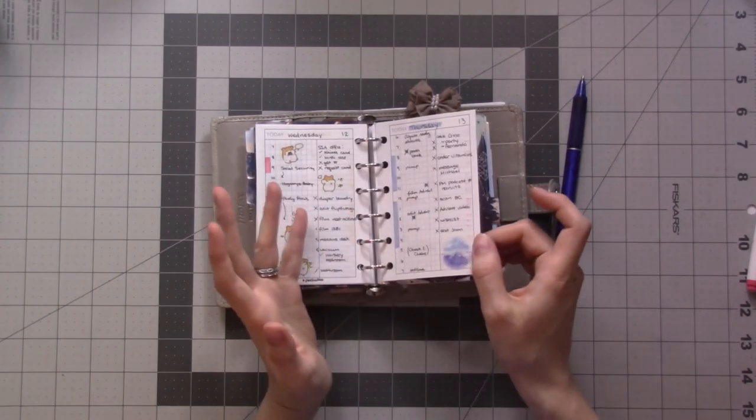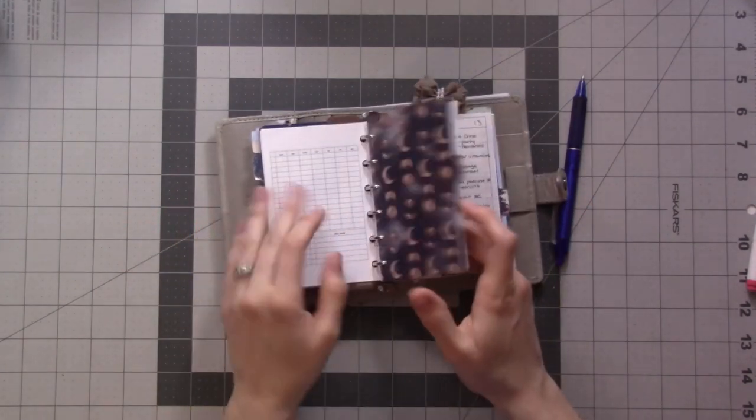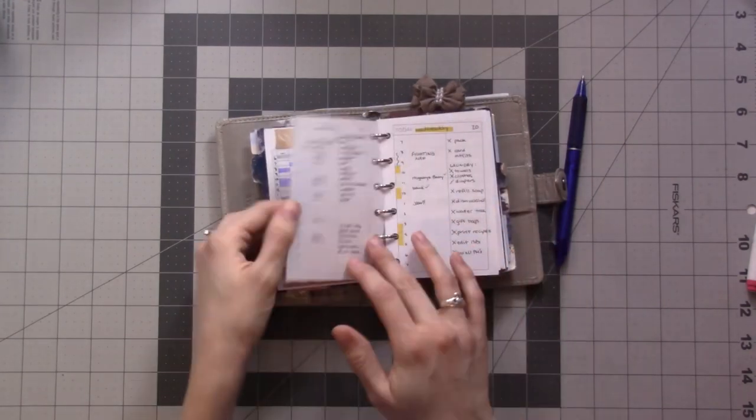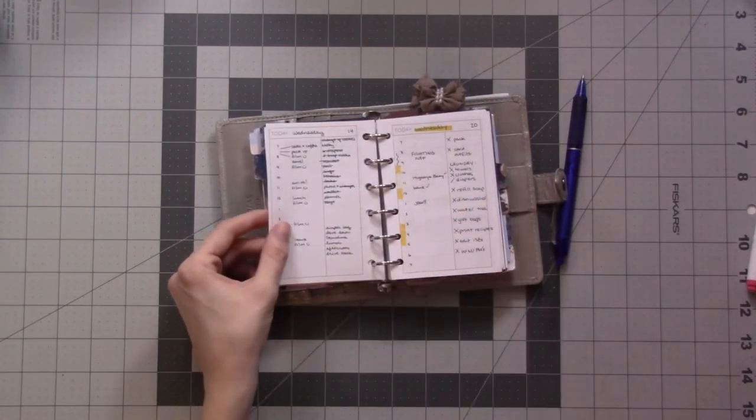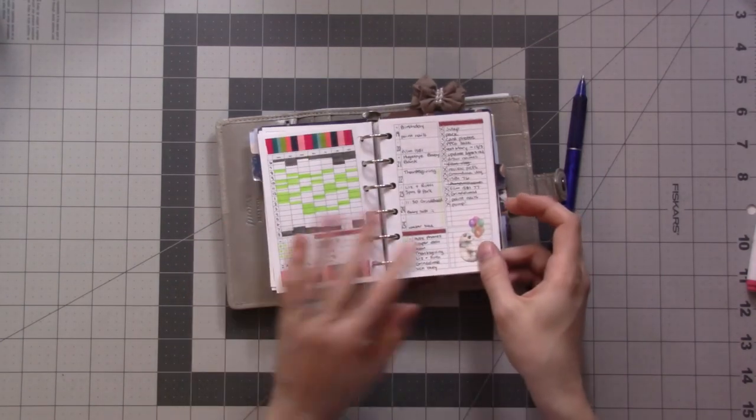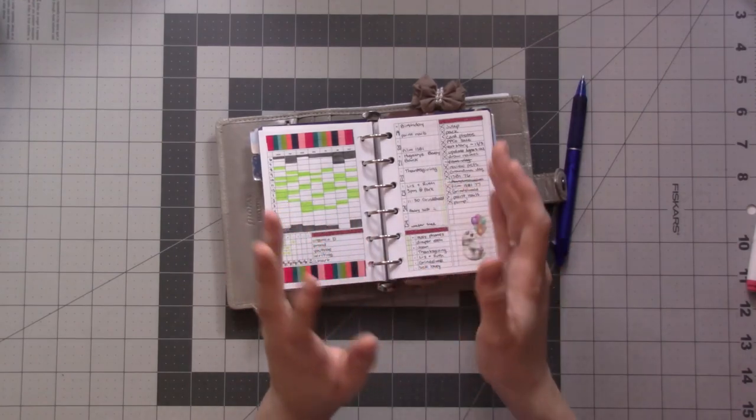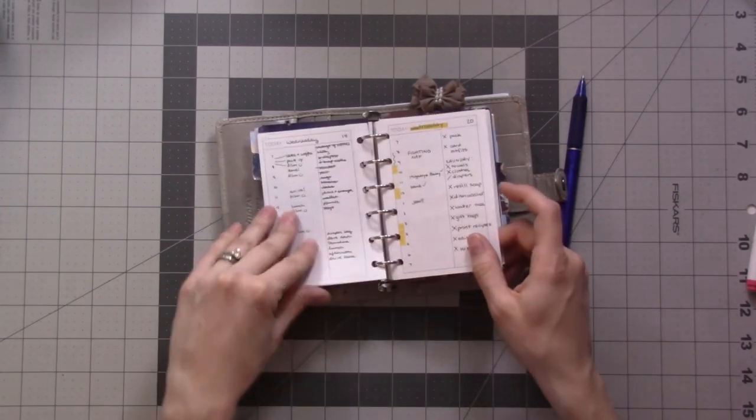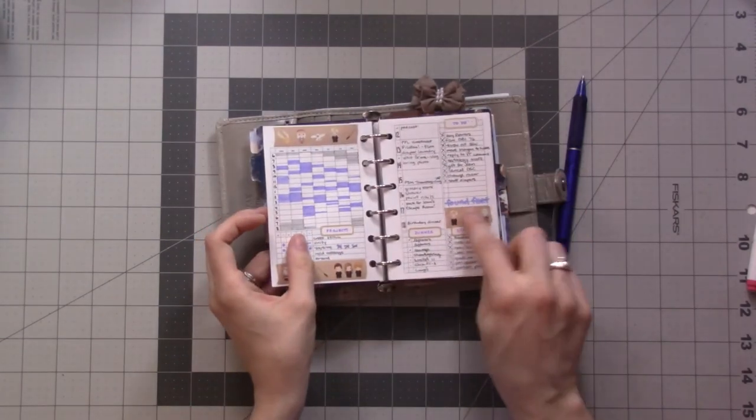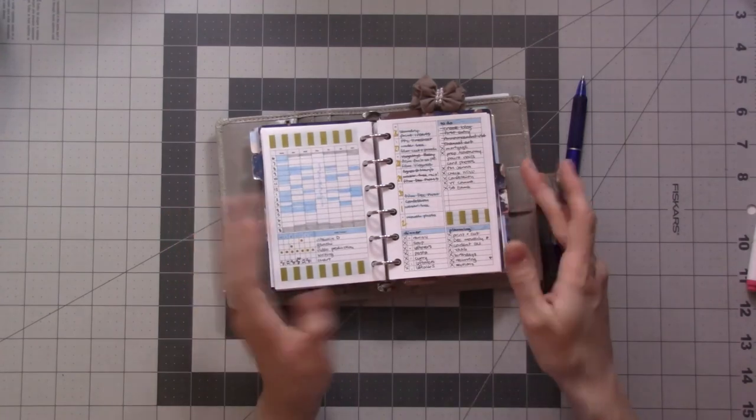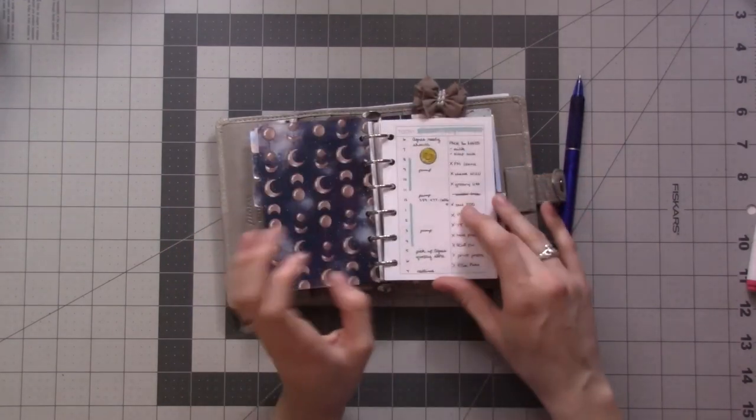The nice thing about them being separate, one of the nice things, is that I don't feel a lot of pressure to make them pretty. I like to decorate my weeklies, but earlier when I was doing the dailies in between, I kind of felt like they have to look kind of nice. I almost want to save the weeklies as sort of a record of what I did that week, milestones and things like that, an overview of the week.